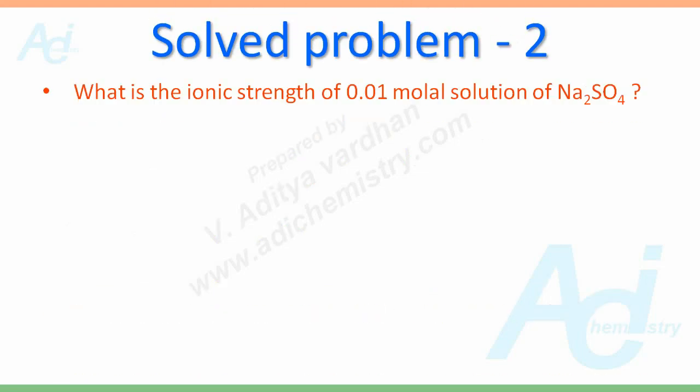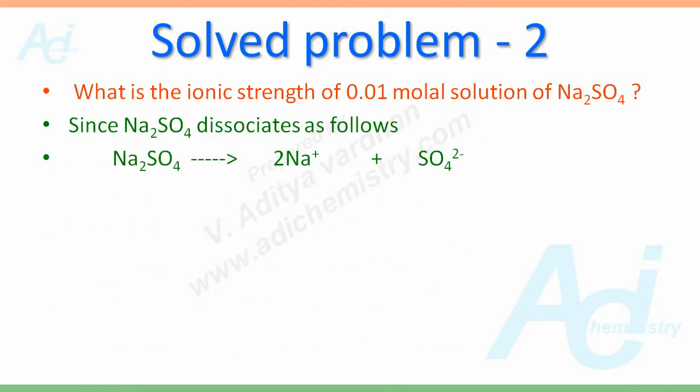Now the second problem, what is the ionic strength of 0.01 molal solution of Na2SO4? We know Na2SO4 completely dissociates into 2 Na plus and SO4 2 minus ions. The concentration of Na plus ions in the solution is now equal to 2 into 0.01 molal and for sulfate it is just 0.01 molal only.